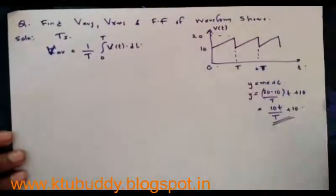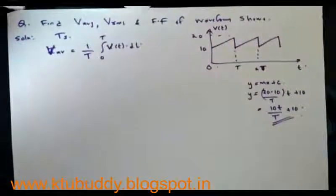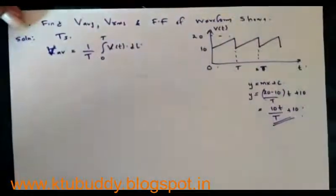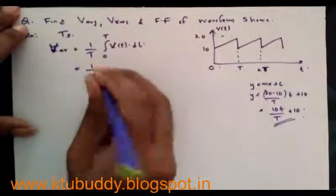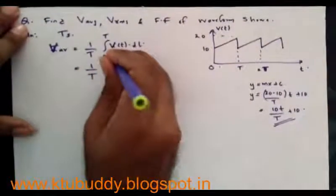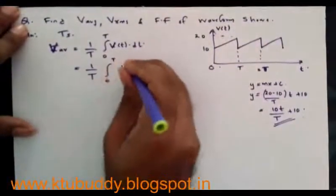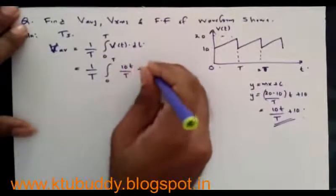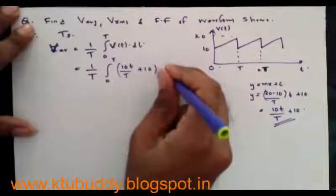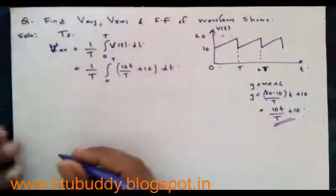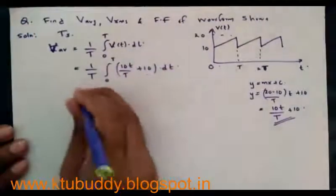Therefore, the instantaneous value of this waveform is given by 10 times t divided by T plus 10. By substituting this in the expression, we get V_avg equals 1 by T integral 0 to T of (10t divided by T plus 10) dt. By solving this, we get the value of the average as 15 volts.